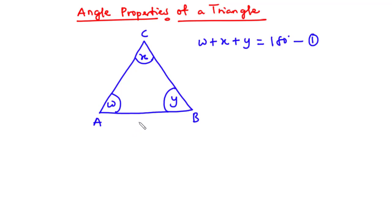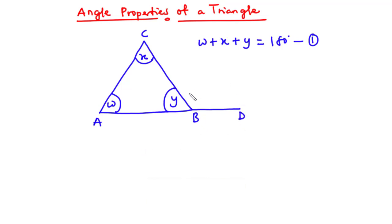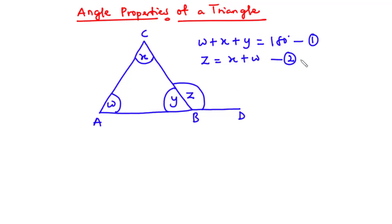Now if one side of this triangle is extended — say AB is extended such that we have point D — then angle Z is formed. This angle is called the exterior angle of the triangle. The exterior angle Z is equal to the sum of the two interior opposite angles, which are angles X and W. So Z equals X plus W. Let's call this equation 2.